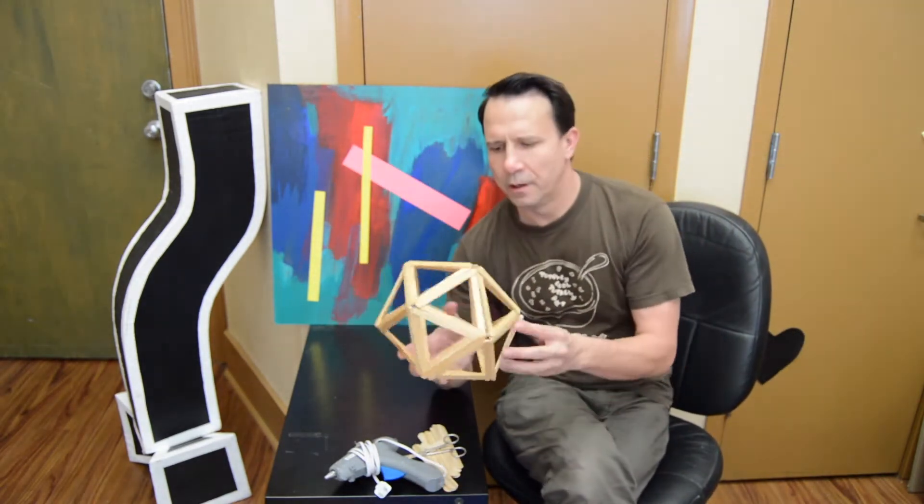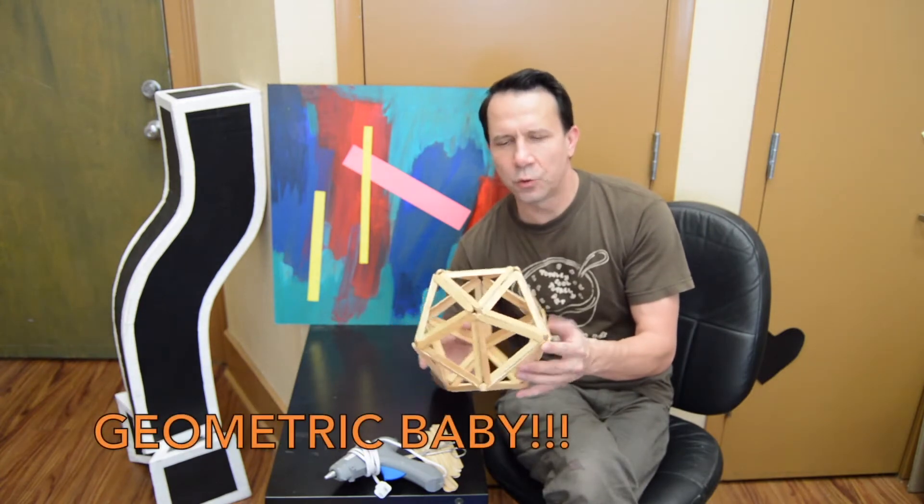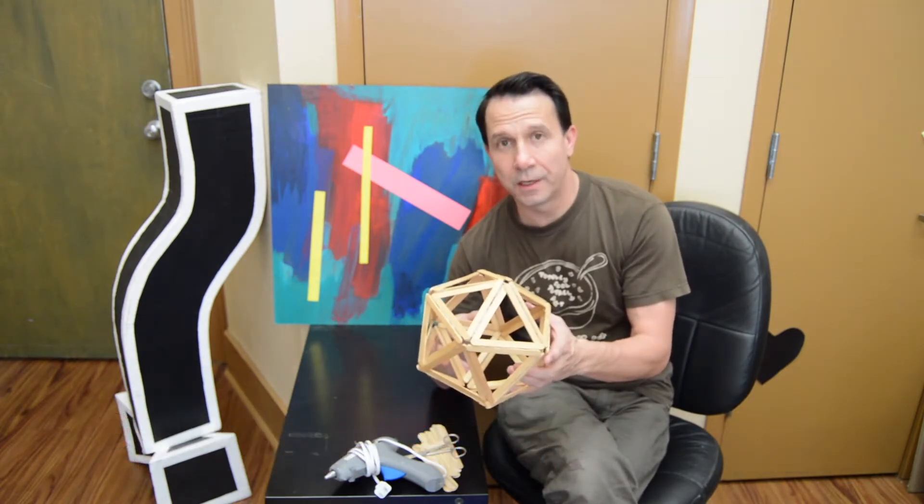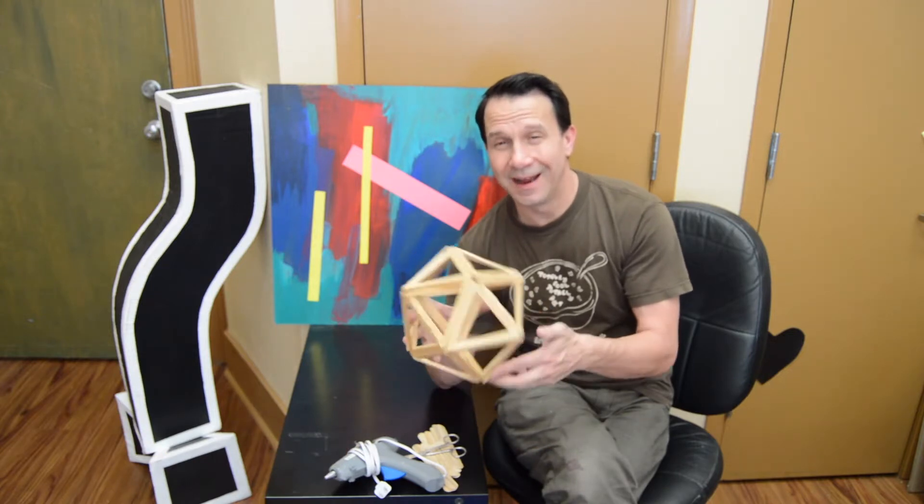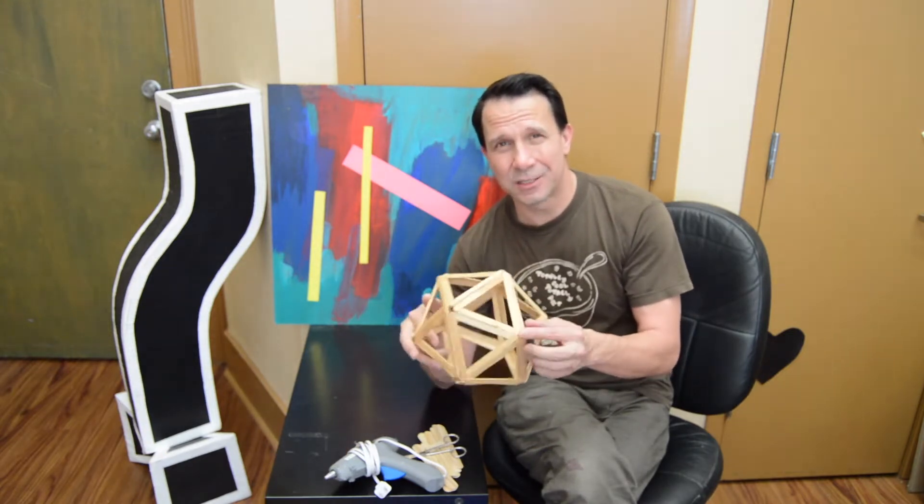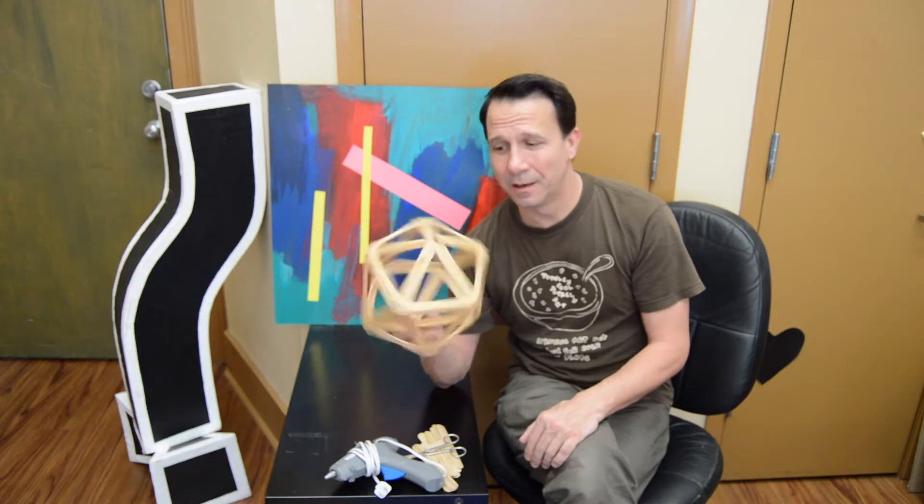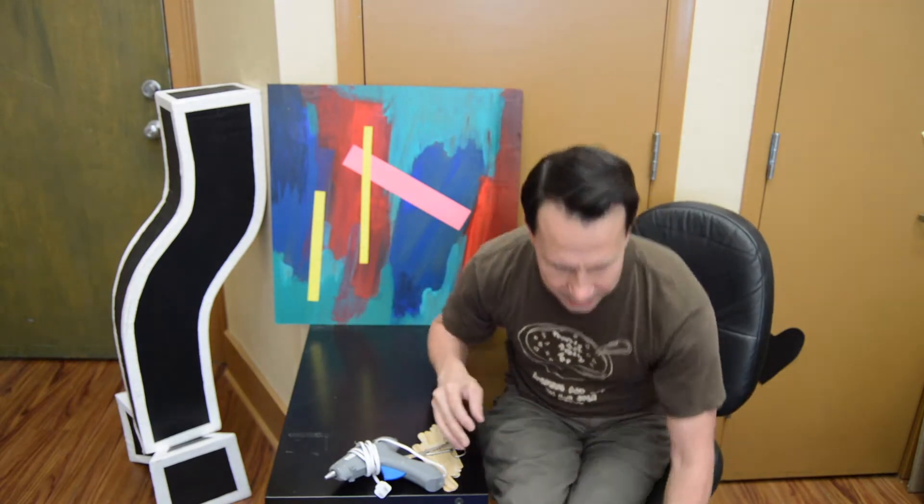Here's another one. If you recall the 20 circle project that we did or 20 equilateral triangles, I took that same idea and just translated it to popsicle sticks from paper. So that's a fun idea.